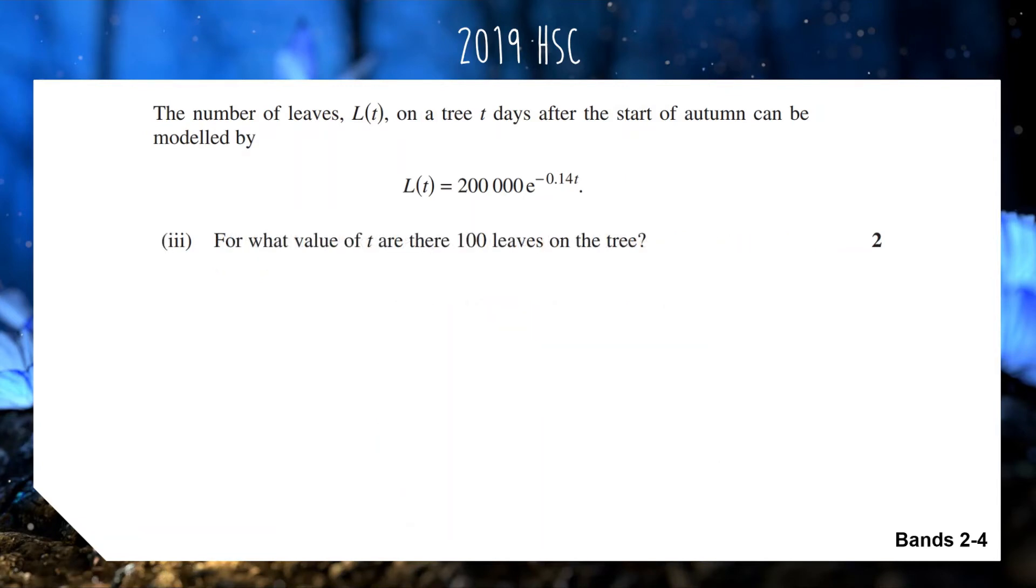For the last part, we want to find the value of t for which there are 100 leaves on the tree. We're going to set the left hand side, which is L for number of leaves, equal to 100 and solve for t. We have 200,000 e to the negative 0.14t equals 100, and we're trying to get t by itself.